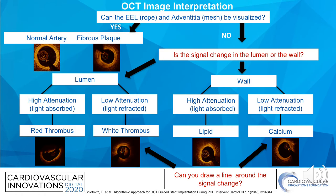To determine what type of plaque is present, the first thing you want to do is evaluate if the EEL, or external elastic lamina — that outer dark portion of the media — can be visualized. If it can be visualized, it's either a normal coronary artery segment or there's fibrous plaque. If you cannot identify the EEL, the first thing you want to do is determine if the signal change is occurring in the lumen or in the wall.